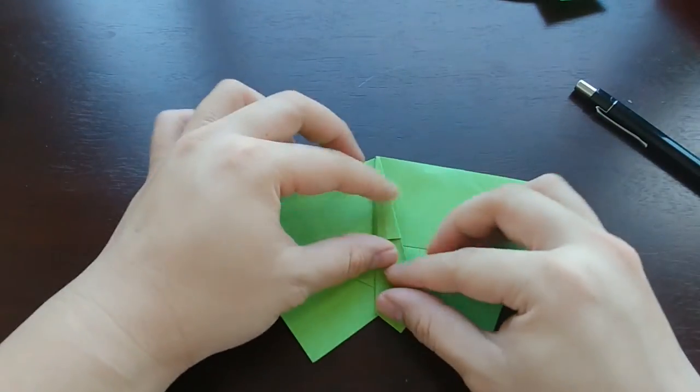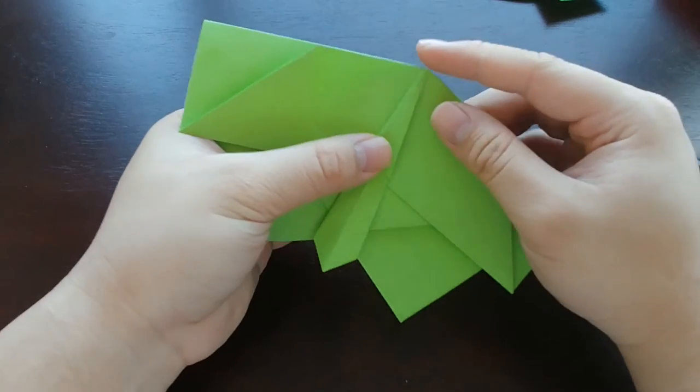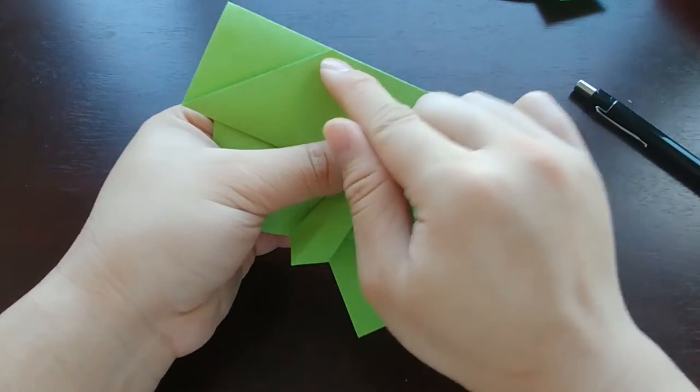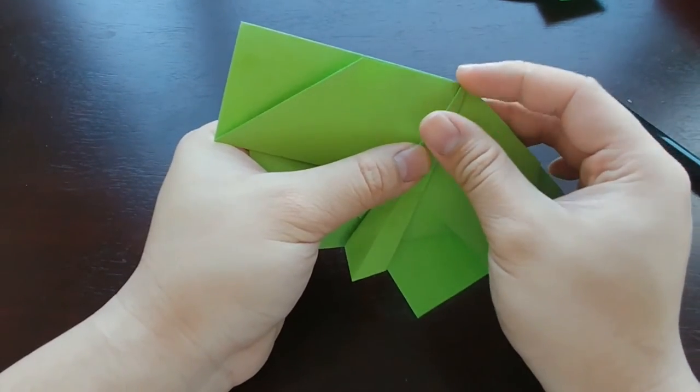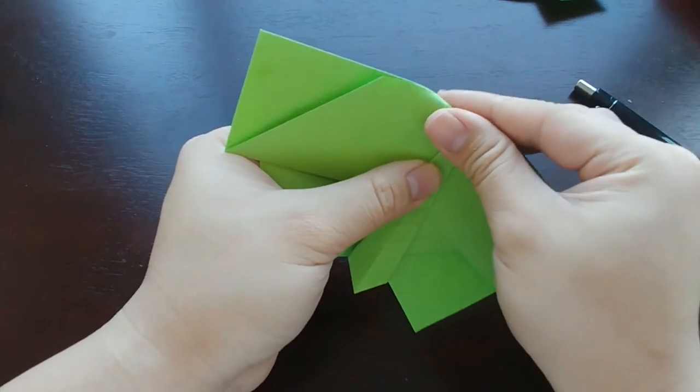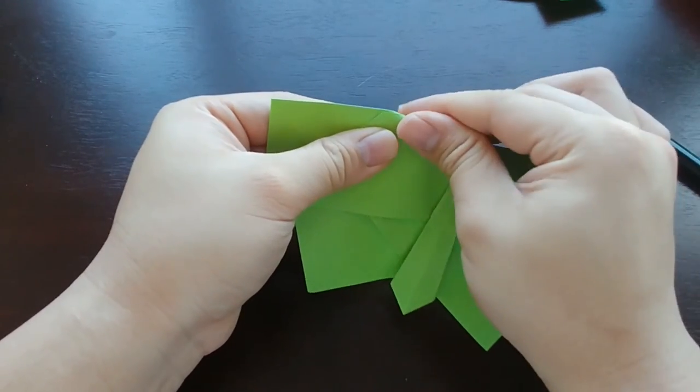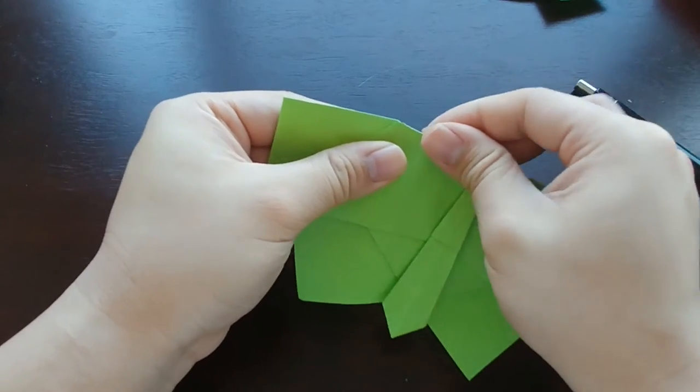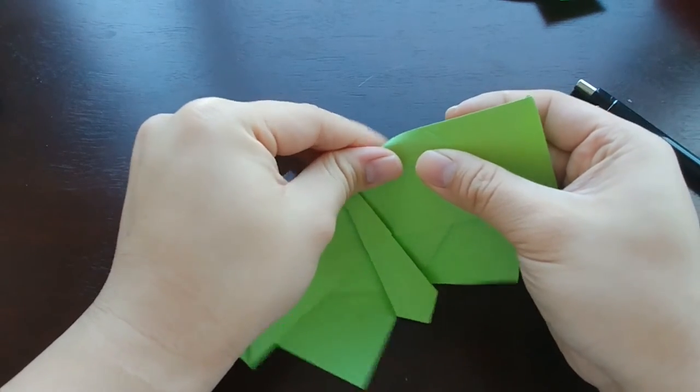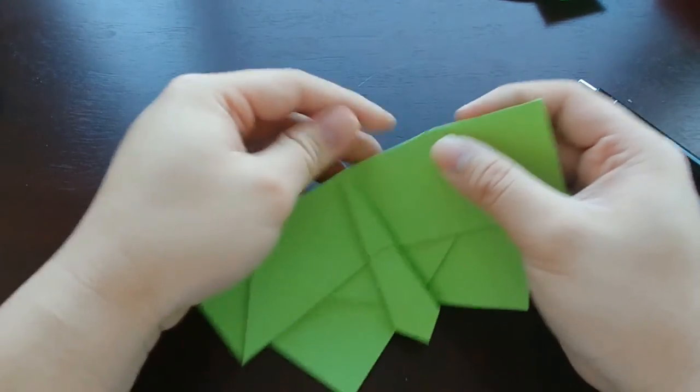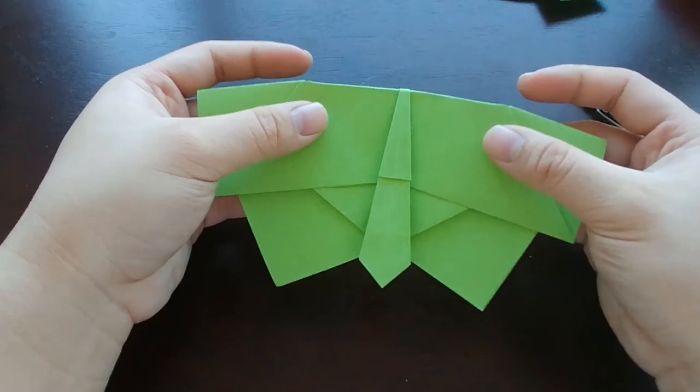And then fold the model back over. Last step here is that we're going to fold the top of the model to where we made those folds way earlier in the video. So, you can take it one at a time. So, fold down, just roll it down essentially. And make the fold from the center to where this point is. And then repeat on the other side, like so.